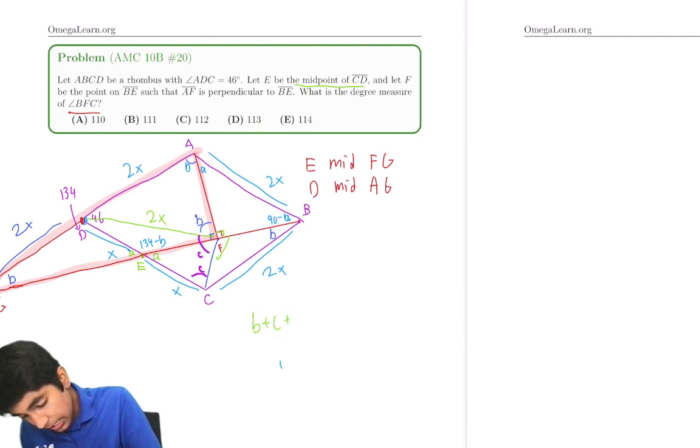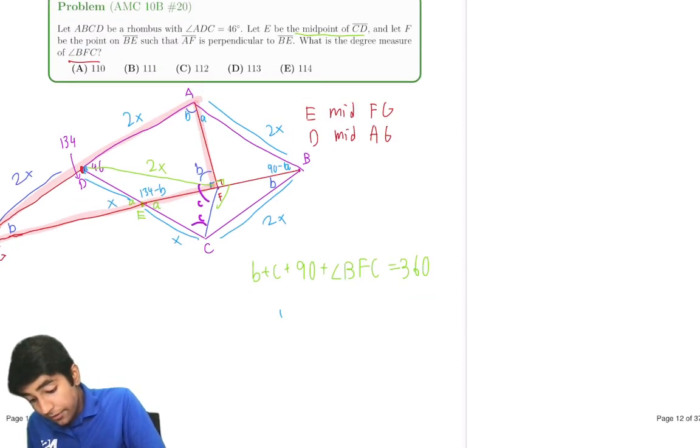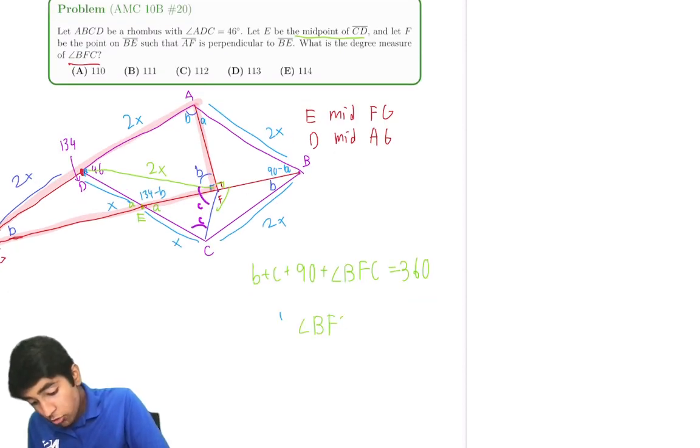B plus C plus 90 plus angle BFC is 360. So BFC is 270 minus B minus C, right?